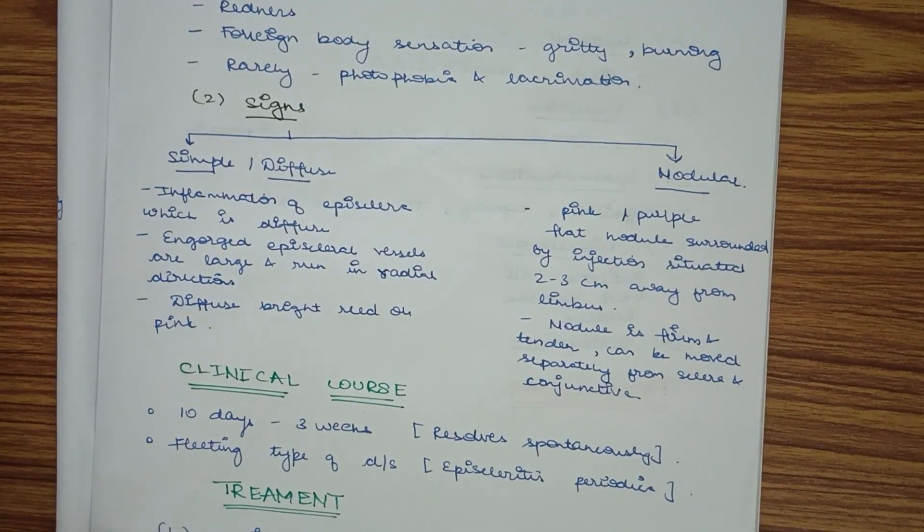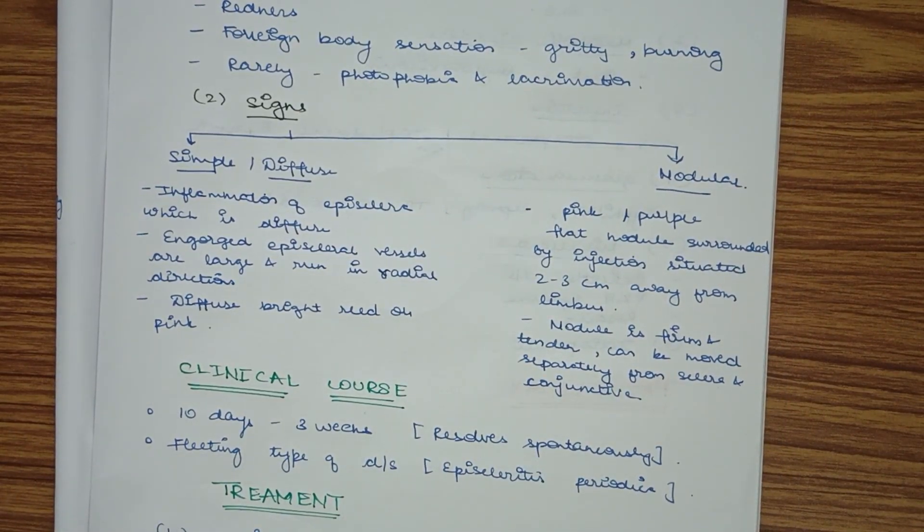In nodular episcleritis, a pink or purple flat nodule forms near the limbus, surrounded by injection two to three millimeters from the limbus. The nodule is firm and tender, meaning painful on touch, and can be moved separately from the sclera and conjunctiva.